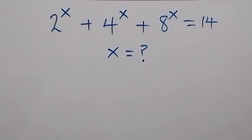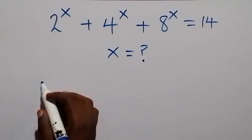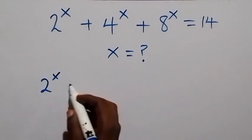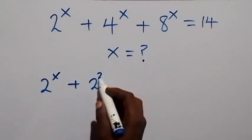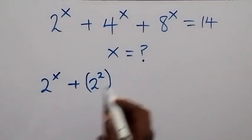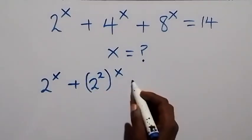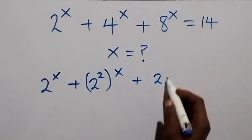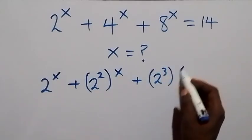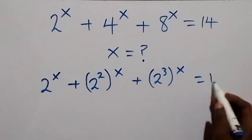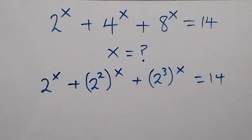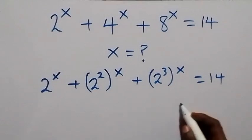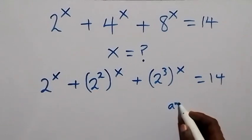Hello, you are welcome. How to solve this nice exponent problem. Here we can write this as 2 raised to power x plus 2, squared, then raised to power x, then plus 2 raised to power x, equals to 14.